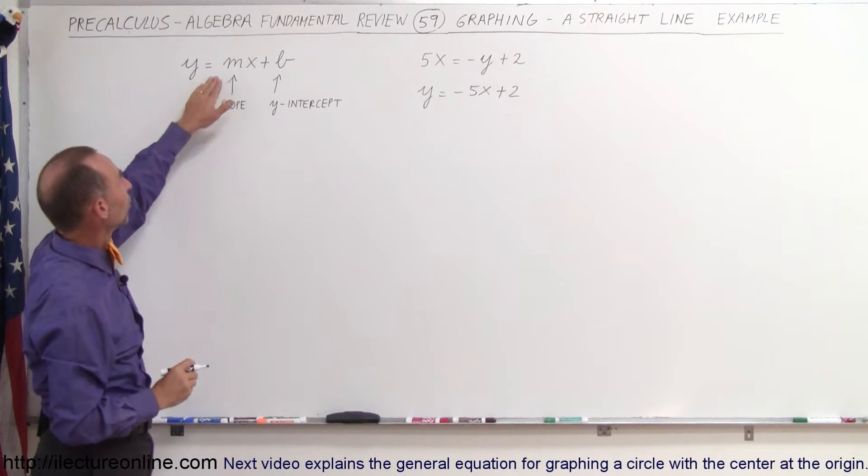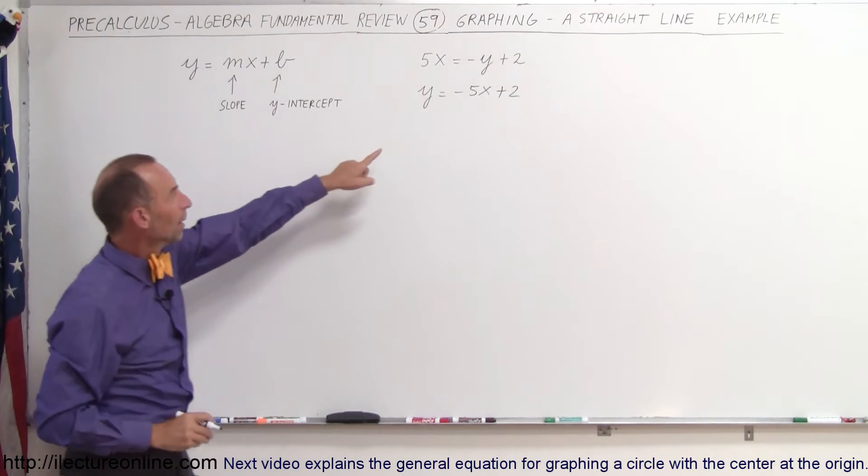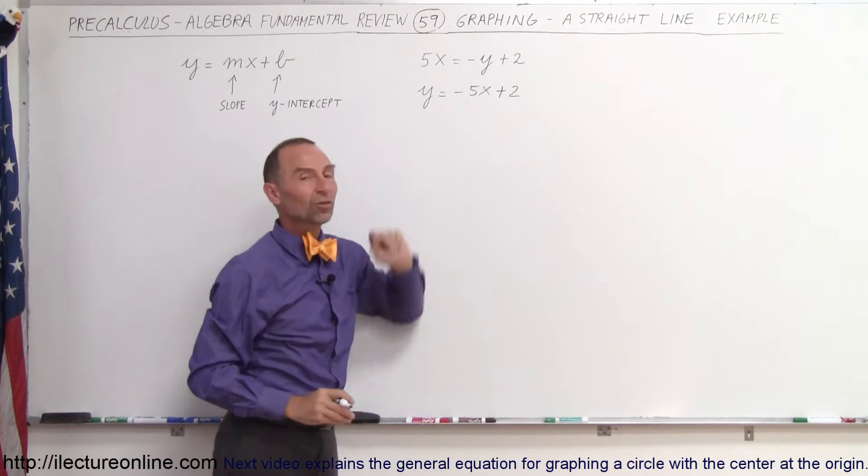Okay, now we have it in the correct format: y equals mx plus b, minus 5 is the slope, 2 is the y-intercept.